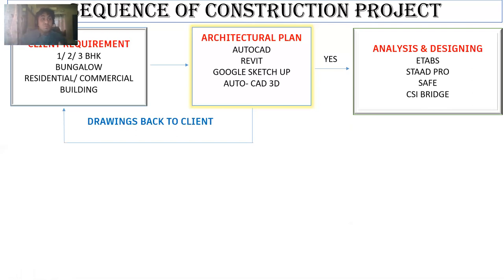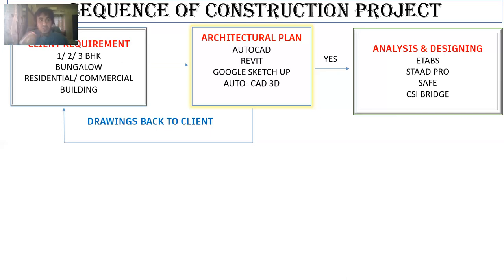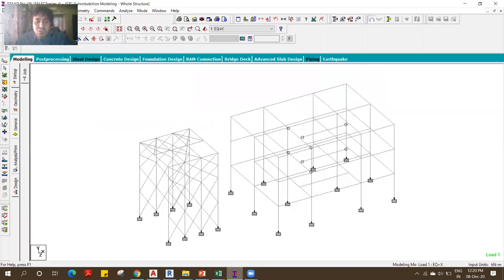With the help of the software, for that particular plan I'm going to put the load on the structure — the dead load and the live load. I'll do the analysis, find the bending moment and shear force, determine how much steel is needed, what is the thickness of the slab, the dimension of the column and beam. If the load is safe, only then I'm going to release the drawings one by one. Let me show you one software called STAAD Pro.